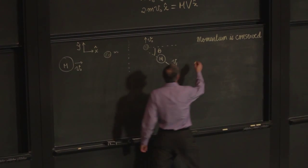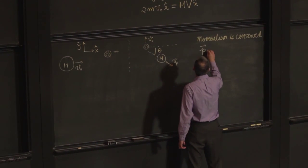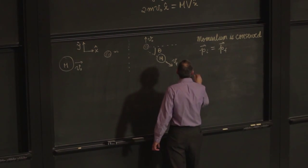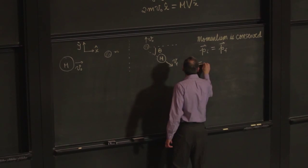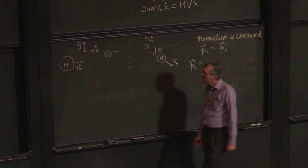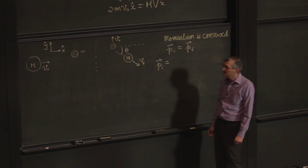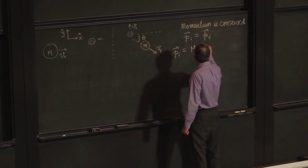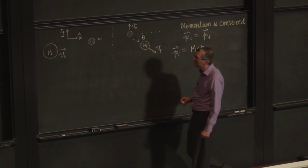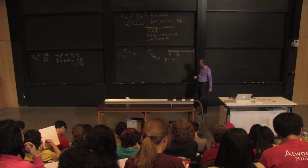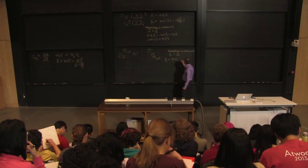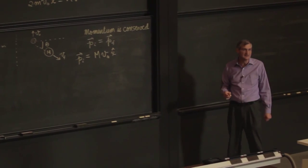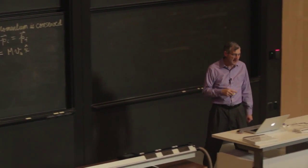So momentum is conserved in symbols. P initial is P final. Well, what is P initial? Well, only the bowling ball is moving, so the momentum should be M V naught in what direction? X, I guess. That one's easy, given our coordinate system. That one's easy.